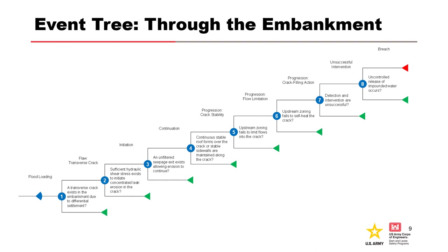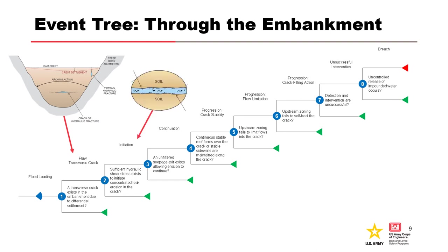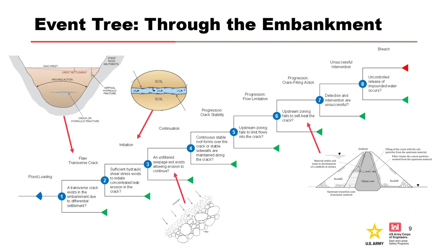In the typical concentrated leak erosion event tree, node 1 assesses the likelihood of a transverse crack existing in the embankment. Given the crack exists, node 2 assesses the likelihood of initiation. These two nodes are the primary focus of this presentation. Node 3 assesses the likelihood of an unfiltered exit. Nodes 4 and 6 assess the mechanical condition for progression, while node 5 assesses the hydraulic condition. Nodes 7 and 8 are unsuccessful intervention and breach respectively. It is good practice to use the generic event tree as a starting point but adapt it for site-specific conditions, as not all nodes may apply to a specific dam.